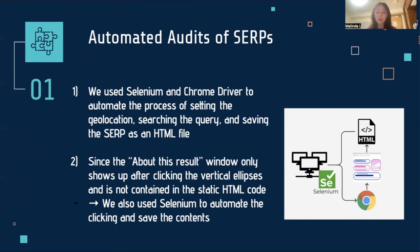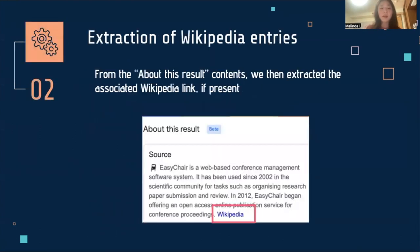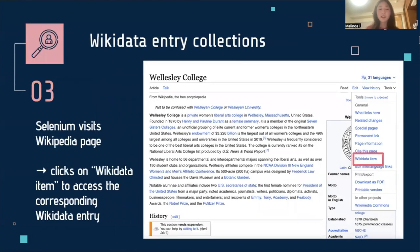Since the About This Result window only appears after clicking on the vertical ellipsis and is not contained in the static HTML code, we also use Selenium to automate this process. And once we collected the About This Result content, we extracted the embedded Wikipedia link whenever it was present. From each Wikipedia page, we then extracted the link to the corresponding Wikidata entry by clicking on the Wikidata item using Selenium. And from there, we extracted the item ID or QID for the entry.